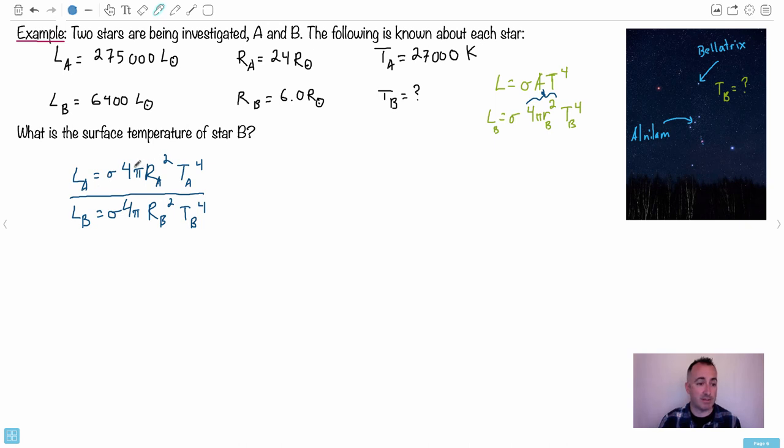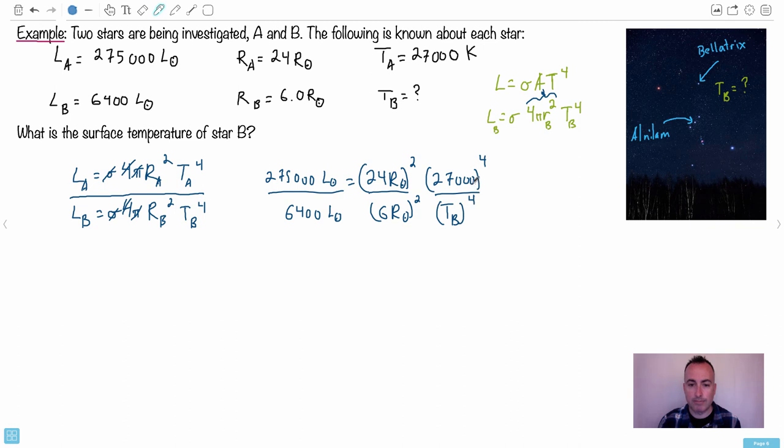So we have 4 times pi times R A squared. Here I used a lowercase. Here it's uppercase. I may as well just use what they used here. Times T A to the fourth. And what you can do then, you can divide a whole equation by another whole equation. So do you see here, I would just, I first wrote down the equation that governs this behavior. And then I actually go about and actually fill in the values. So here for B, everything would just have a subscript B for it. And that's it. All right. So now I just start seeing if anything is simpler. Do you notice the sigmas cancel out? The 4s cancel out. The pi's cancel out. That's nice. Now let's actually sort of zoom into this L A here. It's actually 275,000 L sun over L B, which is 6400 L sun.